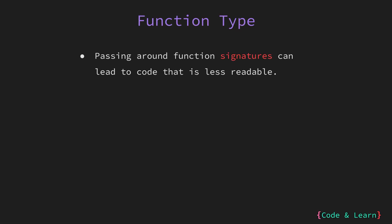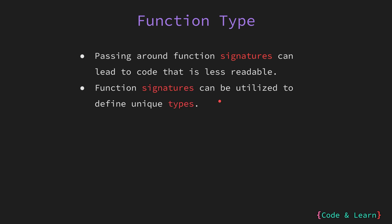While it's possible to pass around function signatures in some programming contexts, doing so can make the code less readable and harder to understand. This is because the signature alone might not provide enough context about what the function does or how it's intended to be used. In Go, you can use function signatures to define a custom type. This means you can create a new type that represents a specific kind of function, which can be useful for making your code more expressive and self-documenting.